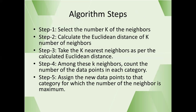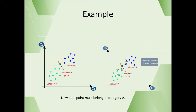The steps are: first, we identify the k-nearest neighbors with the help of Euclidean distance. Then, we count the number of data points among the k that belong to each particular category. Based on the majority, we decide the category of the new data point.